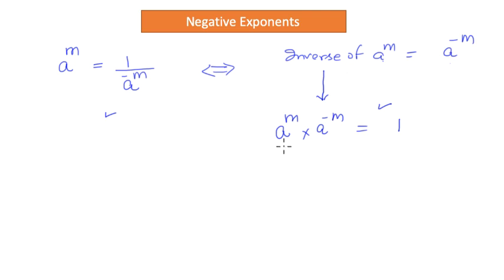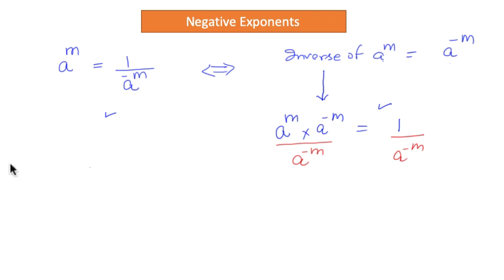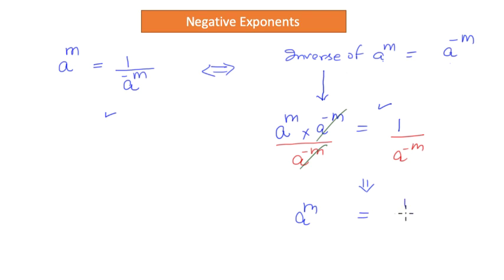Now, what if I divide both sides by a to the power negative m? The expression is still true because it is still balanced — I have simply divided both sides by a to the power negative m. Once I do that, I can simply cancel a to the power negative m on the left-hand side.